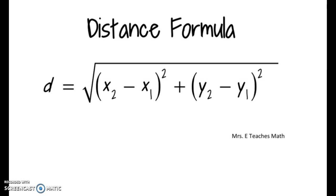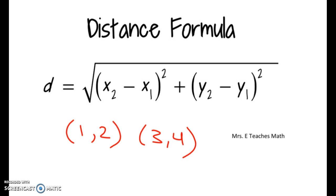This distance formula will be given to you on the OPA and on the MCA. On all those standardized tests you'll have a formula sheet available to you and this is one of the formulas on that sheet. We use the distance formula when we are given two coordinate points and they want us to find the distance between them. I'm going to show you how the distance formula is kind of related to the Pythagorean theorem. Yes, it looks a lot more complicated than just a² + b² = c², but essentially the distance formula is the same thing, so it doesn't matter which one you use. Sometimes the distance formula might be easier and other times the Pythagorean theorem might be easier.